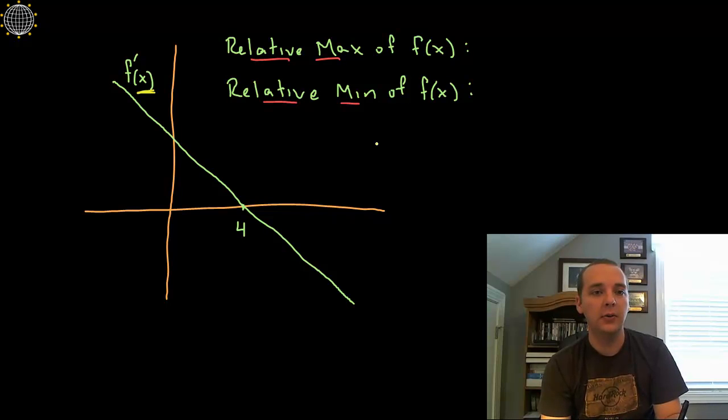Well here the derivative is zero right here. Now at first glance if you're not paying attention you would say well no, no, no the slope is not zero there.